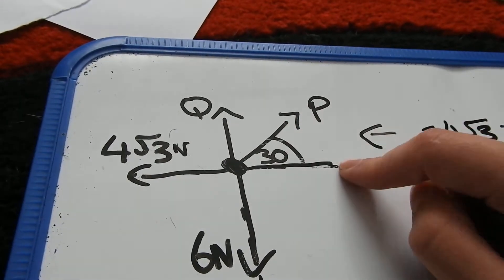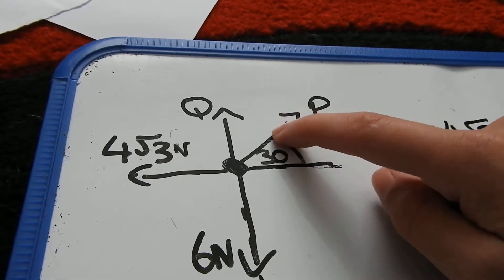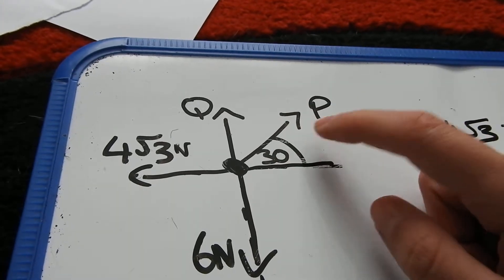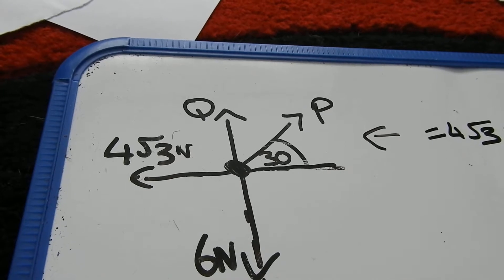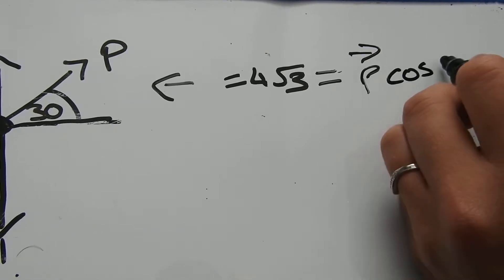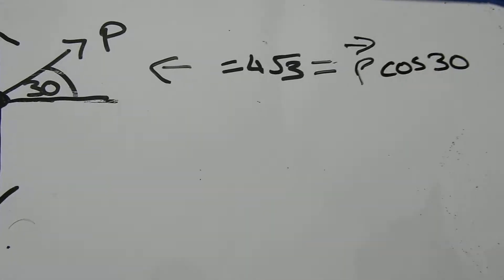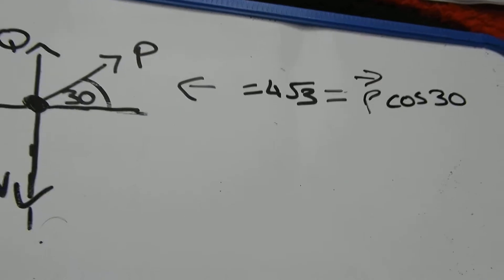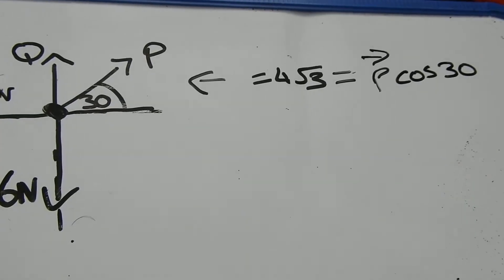So we have just our P. And we're going to have to resolve this because it's at an angle. So when the angle's close to the horizontal, it's going to be cos. So going to the right, we have P cos and our angle, which is 30. So that is our part A. That's our equation for the horizontal.